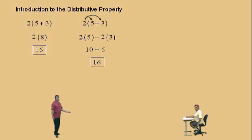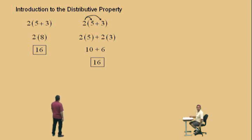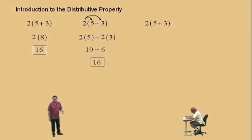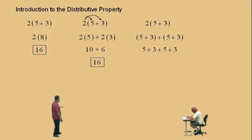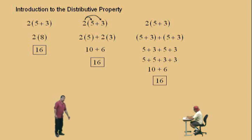Now, most of you are probably saying you'll just do the parenthesis first. Yeah, but you can't do that all the time — you'll see. Because I know you're asking when you'll ever use the distributive property; you'll see very soon. Now, same problem: 2 times (5 plus 3) basically means you have two (5 plus 3)'s being added together. And 5 plus 3 plus 5 plus 3 — you can add in any order — becomes 5 plus 5 plus 3 plus 3, which is 10 plus 6, which is again 16.